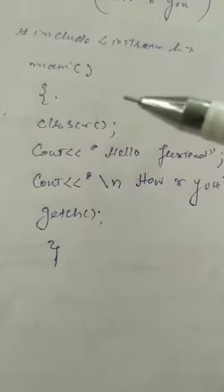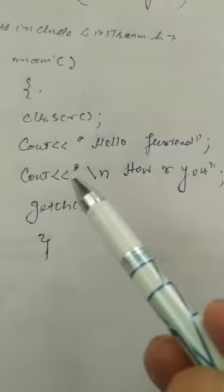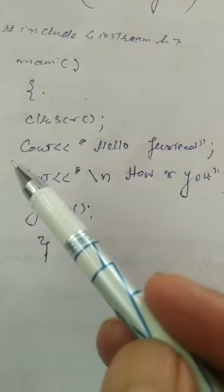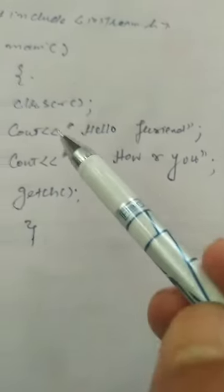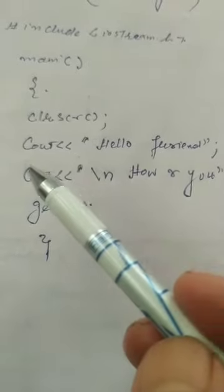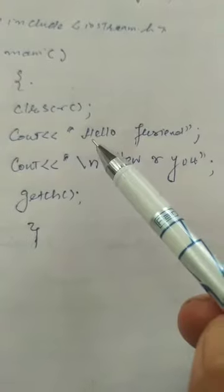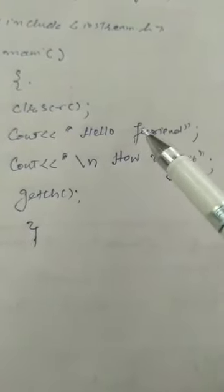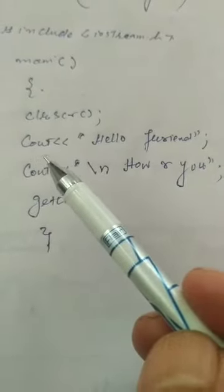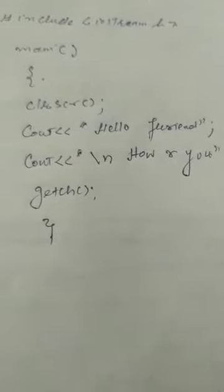Then cout is the C++ output function which gives output to the screen. The syntax of cout is: cout followed by less-than signs, then inverted commas, then your text, then inverted commas, then a semicolon. Whatever we write inside the inverted commas is printed exactly on your screen, alphabet by alphabet. So cout will print 'Hello Friend' exactly on the screen.